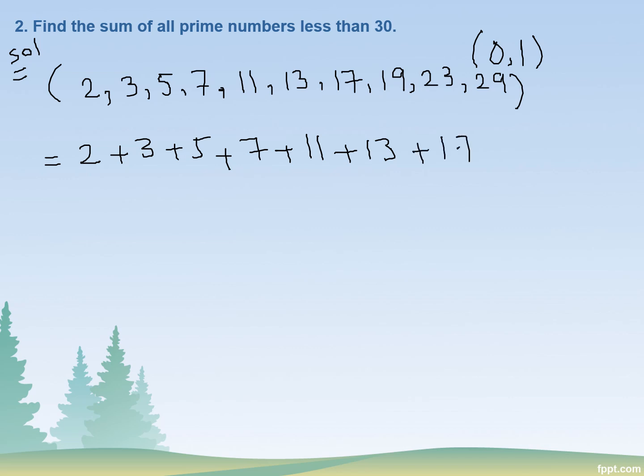Plus 17 plus 19 plus 23 plus 29. Sum these up and you will get 129. This will be your answer. That's it for today.